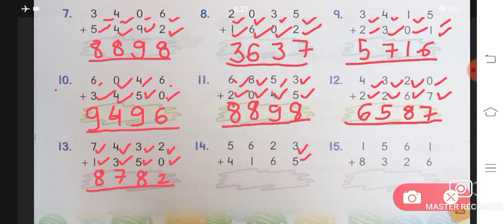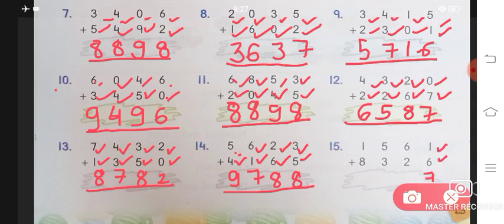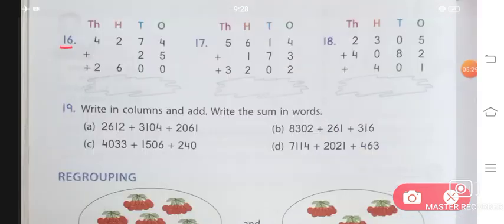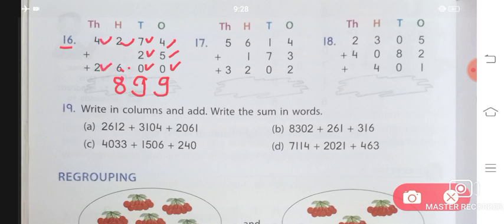14th one: 3 plus 5 will give you 8, 4 plus 4 will give you 8, 4 plus 1 will give you 7, and 5 plus 4 will give you 9. The answer is 9, 7, 8, 8. 15th one: 1 plus 6 will give you 7, 6 plus 2 will give you 8, 5 plus 3 will give you 8, and 1 plus 8 will give you 9. Answer is 9, 8, 8, 7. 16th one: 4 plus 5 plus 0 will give you 9, 7 plus 2 plus 0 will give you 9, 2 plus 6 will give you 8, 4 plus 2 will give you 6. Answer is 6, 8, 9, 9.